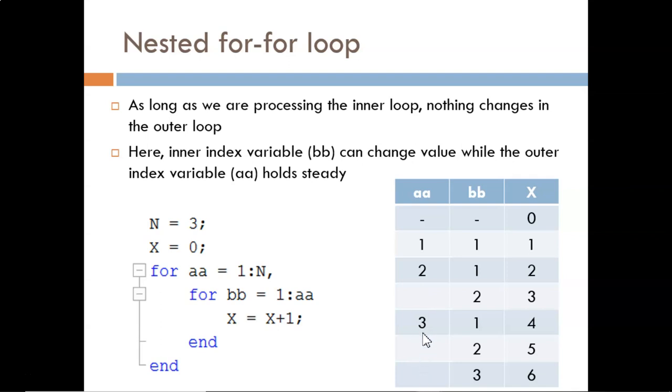Walking through this step by step, we see X is first assigned the value 0. At this outer for statement, we know immediately that AA will equal 1, then 2, then 3. However, we can't be sure yet if there will be any blanks. So we'd start by just filling in a 1 in this row.